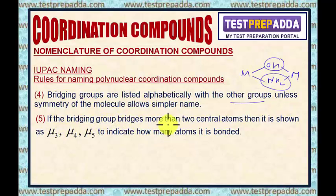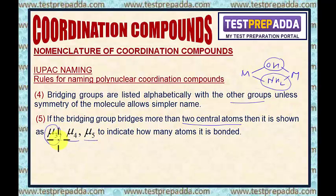Rule five: if the bridging group bridges more than two central atoms, please note — in the previous example the bridging ligand was bridging two central atoms. If more than two central atoms are involved, then it is written as mu-3, mu-4, mu-5, etc. Mu-3 if it bridges three central atoms, mu-4 if it bridges four central atoms.